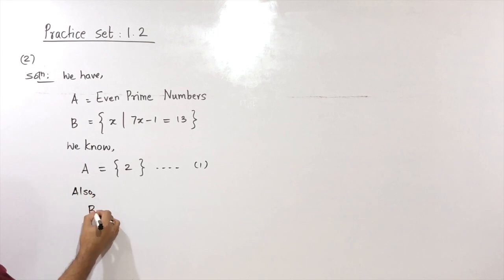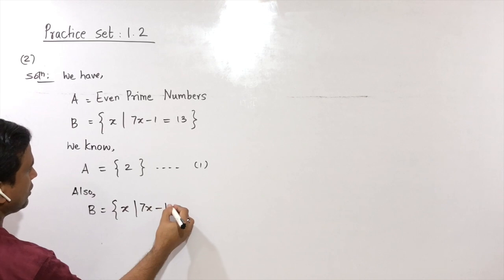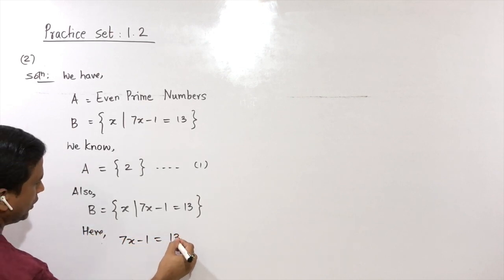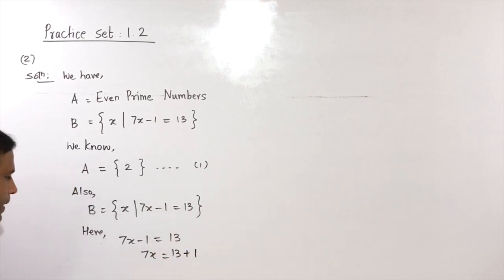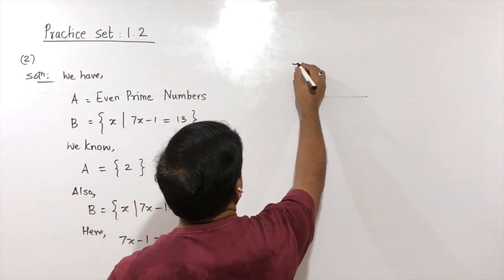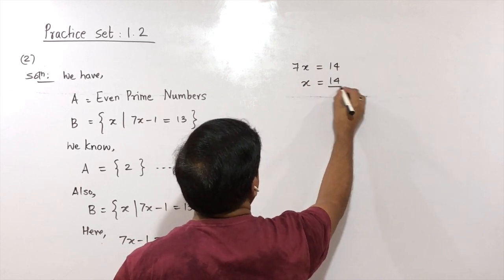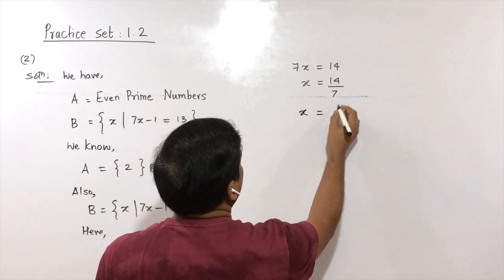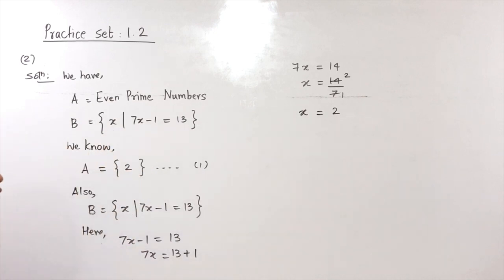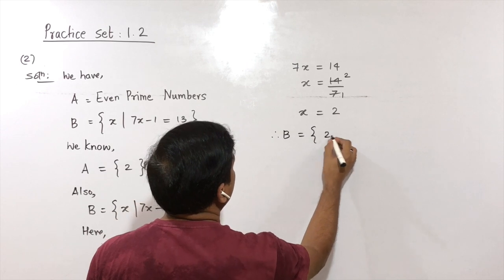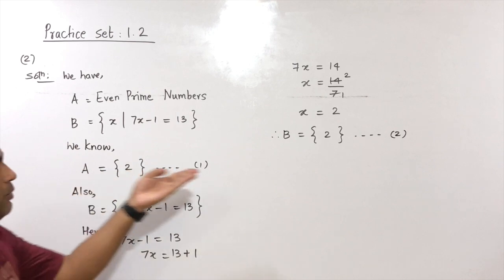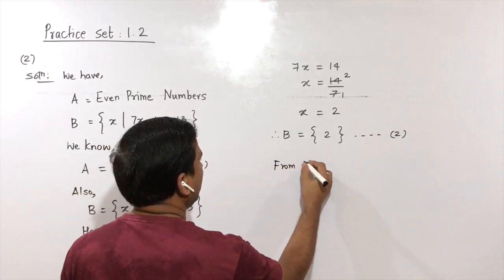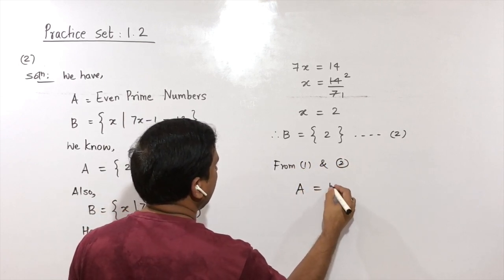For set B: we solve 7X − 1 = 13. Moving 1 to the other side gives 7X = 13 + 1 = 14, so X = 14/7 = 2. Therefore set B = {2}. This is statement number 2. Observing statements 1 and 2, set A and set B have exactly the same elements. Therefore we conclude: set A is equal to set B.